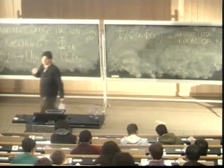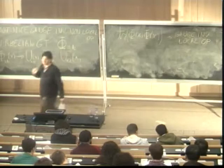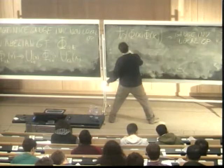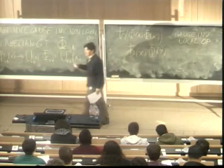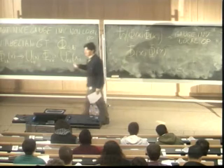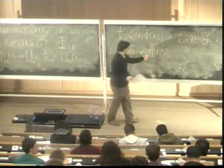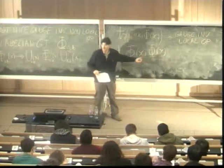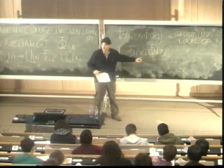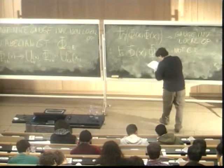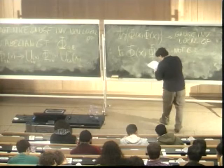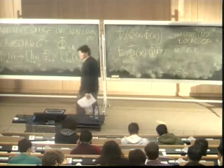Now say you are a nerd and insist on having something of the form phi at point x and phi at point y. Taking the trace wouldn't help anymore, because you have U and U^{-1} at different points x and y, so this is not gauge invariant. What helps to construct gauge invariant quantities similar to that are Wilson lines.